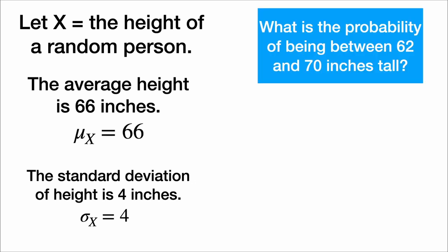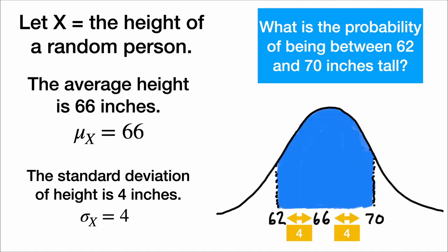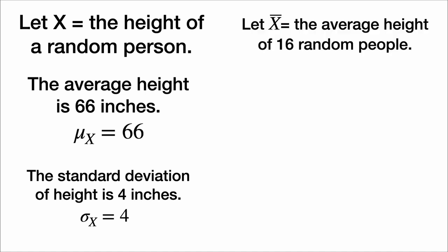What is the probability of being between 62 and 70 inches tall? Well, each of those numbers is 4 inches from the mean, or 1 standard deviation from the mean. So that probability is 68%.